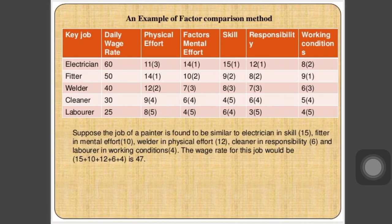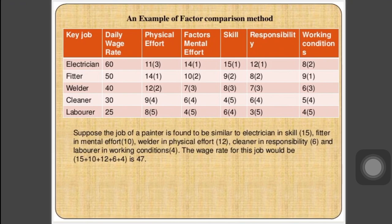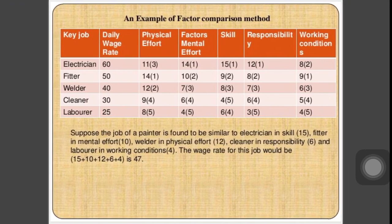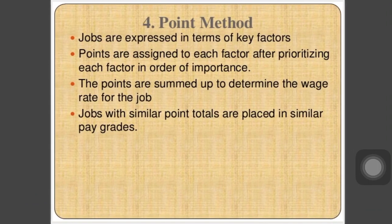For example, consider job roles such as electrician, fitter, welder, cleaner, and laborer. Electricians have the highest risk factors and require the most skill, followed by fitters and welders. Based on this ranking, the wage structure is decided and implemented accordingly.